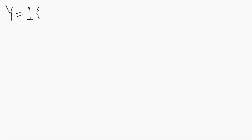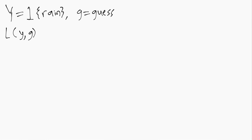This video goes through a prediction example where you're making a bet about whether it will rain or not. The random variable y is a dummy for whether it rains or not, and little g is your guess about whether it will rain. We make a simple one-dollar bet with a friend, so the loss function is a function of y — whether or not it rained in reality, one or zero — and then your guess.